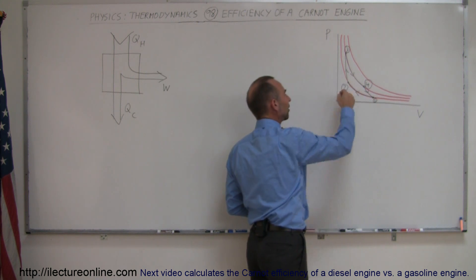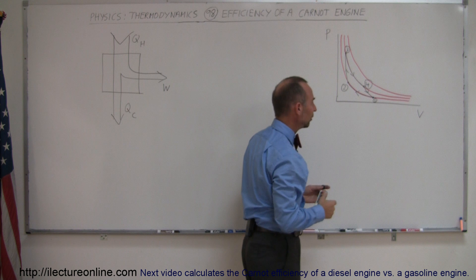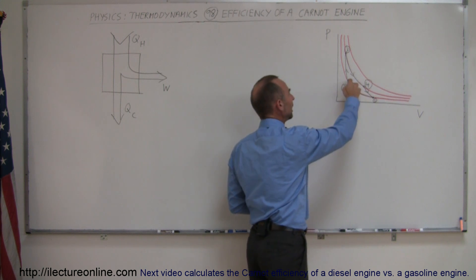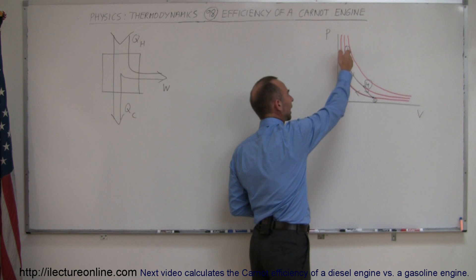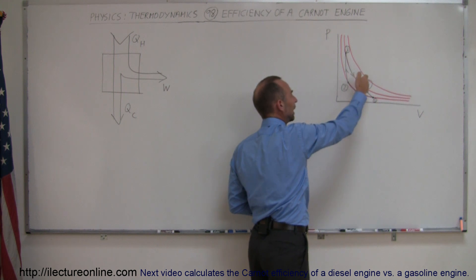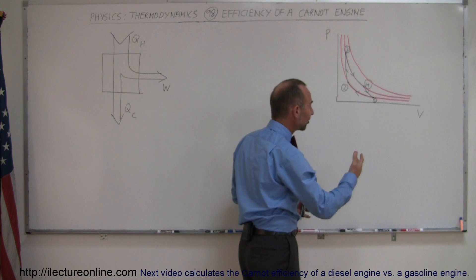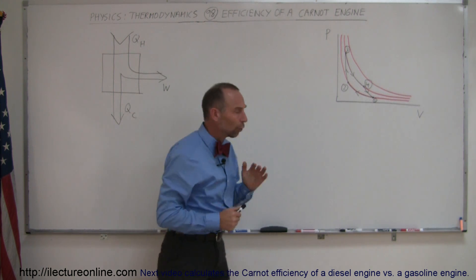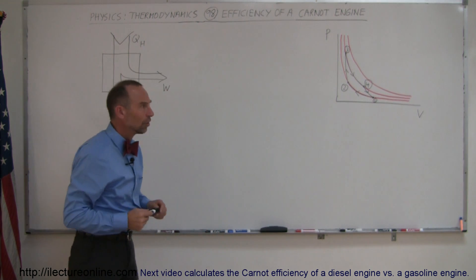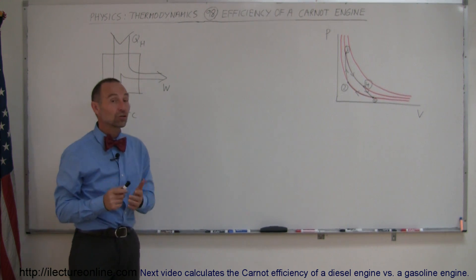You start over here at volume one, compress the gas isothermally so no change in temperature, then compress the gas adiabatically, then allow the gas to expand isothermally, and then let the gas expand adiabatically. When you have a cycle like that consisting of those four thermodynamic processes, you have what we term a Carnot engine.